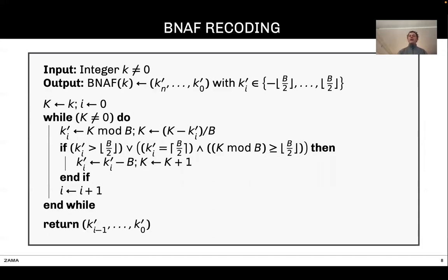This is the general recording algorithm. The input is some integer k and the output is the BNAF of k, a decomposition of k using digits in the set minus B/2 up to B/2. There is a while loop and at each iteration, we extract one digit of the scalar k. Then we update scalar k and depending on some condition, we will flip the digit.